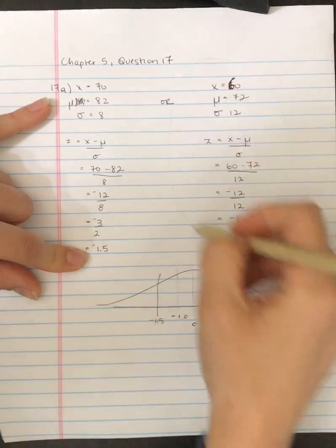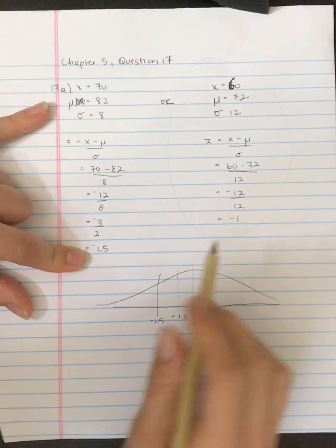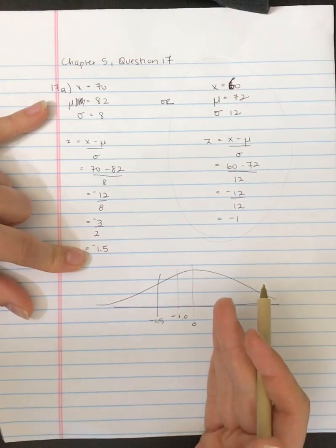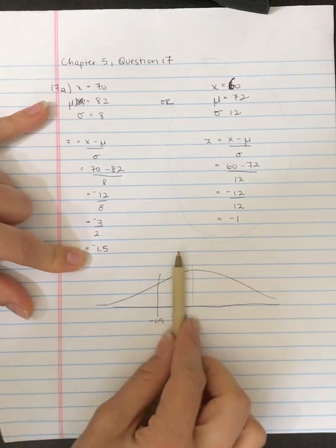So it's this one that gives you the better score because it's closer to the mean. It's a higher score. It's a greater score.